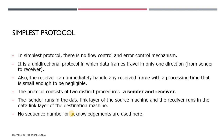The protocol consists of two distinct procedures: first for the sender and second for the receiver. The sender runs in the data link layer of the source machine and the receiver runs in the data link layer of the destination machine. No sequence numbers and no acknowledgements are used here. This protocol is designed simply to send data packets — there is no acknowledgement and no sequence number.